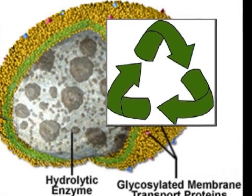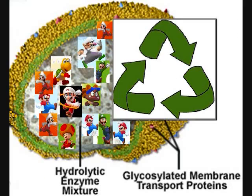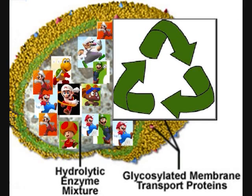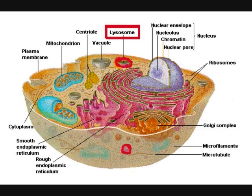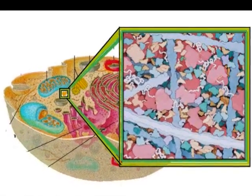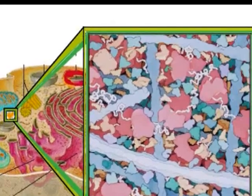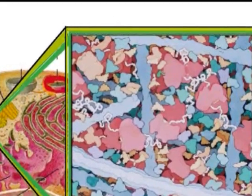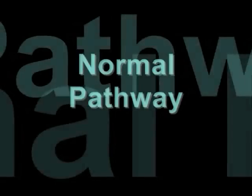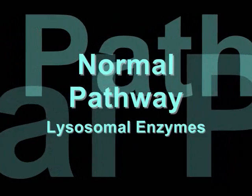A lysosome is analogous to a recycling center where diverse hydrolytic enzyme activities occur in an acidic environment. The lysosome is important because densely packed macromolecules need to be regulated to maintain cell balance. How do the enzymes get delivered to the lysosome?